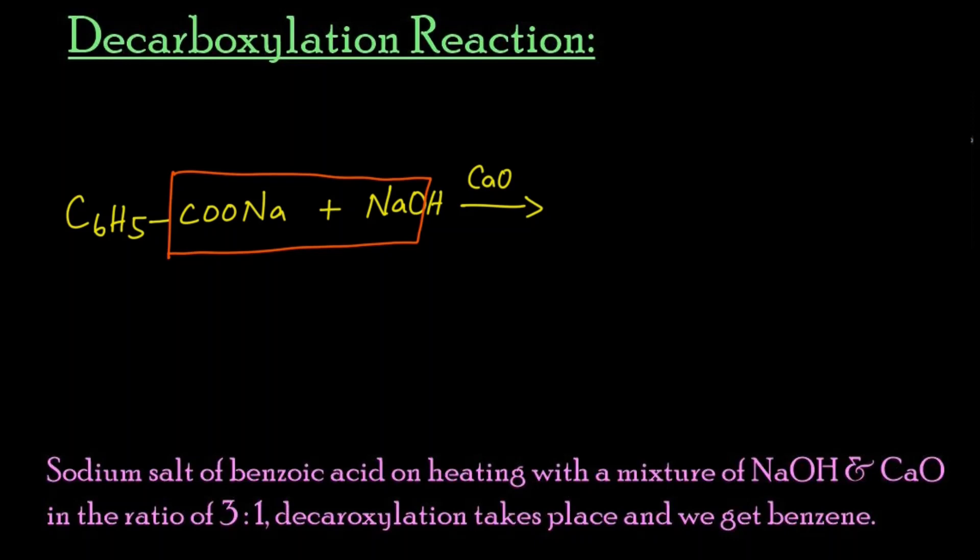Here, 2 Na, 1 carbon, and 3 oxygen - that is, 2 oxygen from sodium benzoate and 1 oxygen from sodium hydroxide. All together, sodium carbonate will get eliminated, and the remaining hydrogen will get attached to this phenyl group, that is the benzene ring: C6H6. This is called benzene.